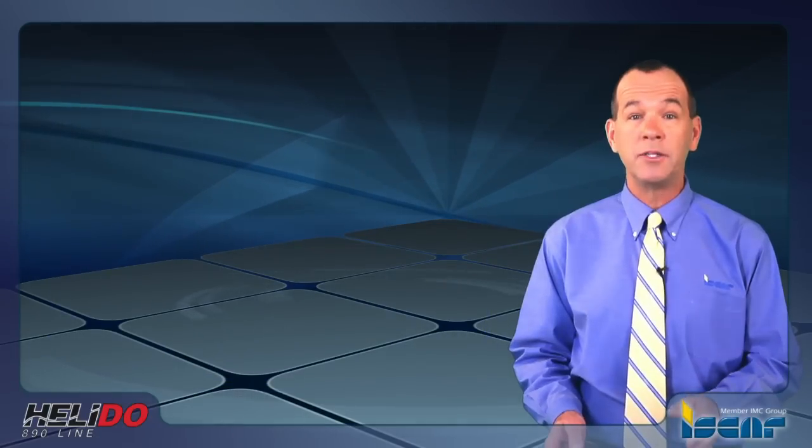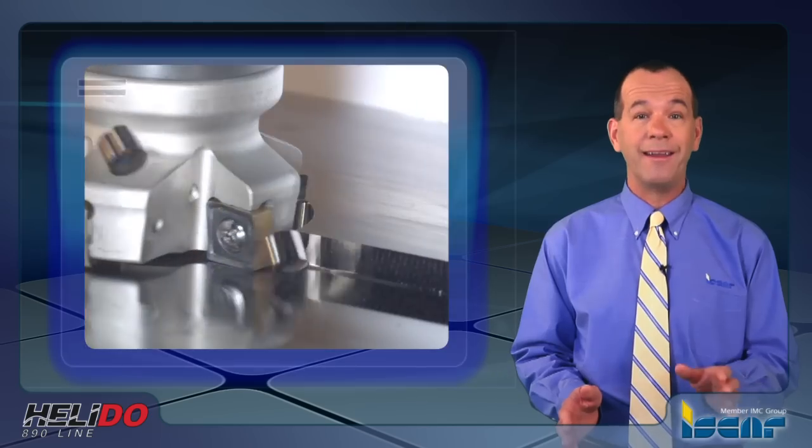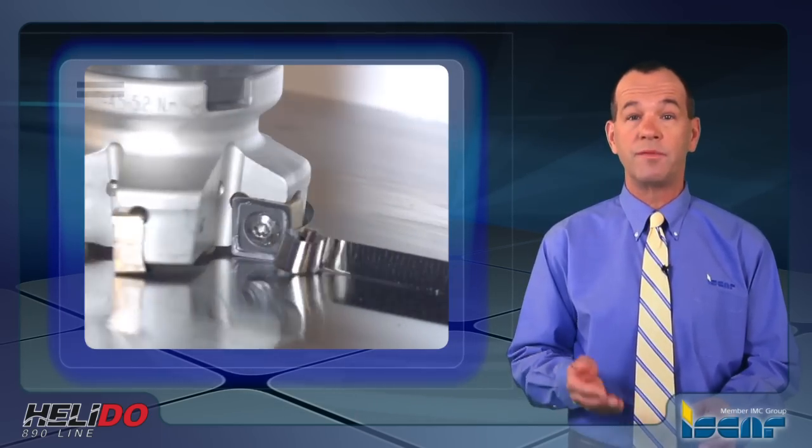When looking at the inserts more closely, you can see the progressive cutting geometry constructed upon a positive rake. This combination ensures smooth milling with soft entry and exit from the material, which is a very critical consideration in terms of spindle integrity.